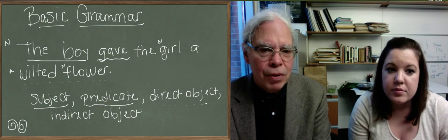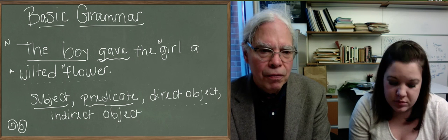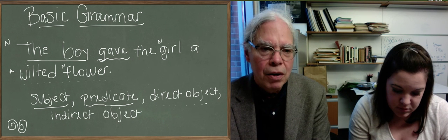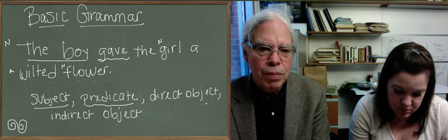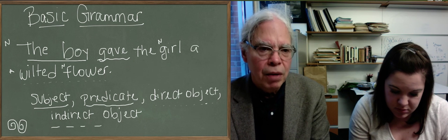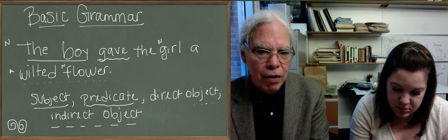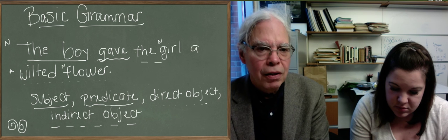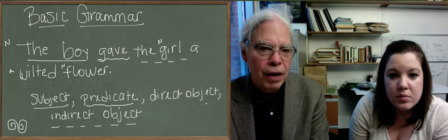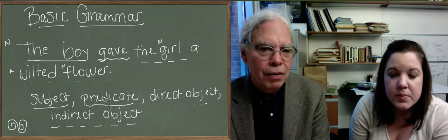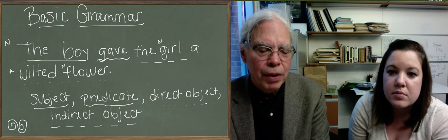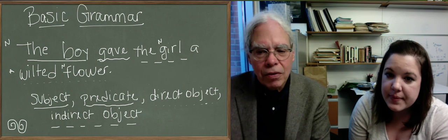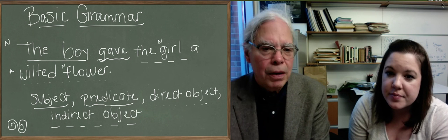So these are the four basic things we need to understand. What's the subject of a sentence? What's the predicate? That's gave. What's the direct object? To repeat, that's the wilted flower, a wilted flower. And a is just another kind of adjective. And the indirect object, the girl. And the is another kind of adjective like a. They're different. We'll learn more about them soon. And that's the basic grammar that we are going to practice.